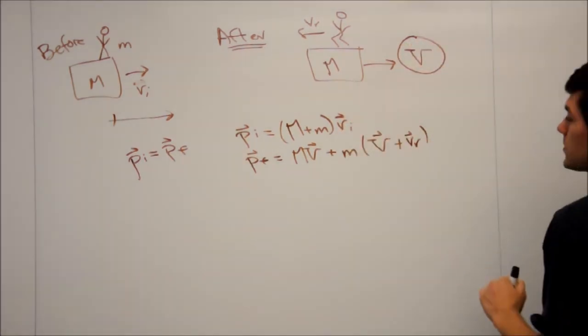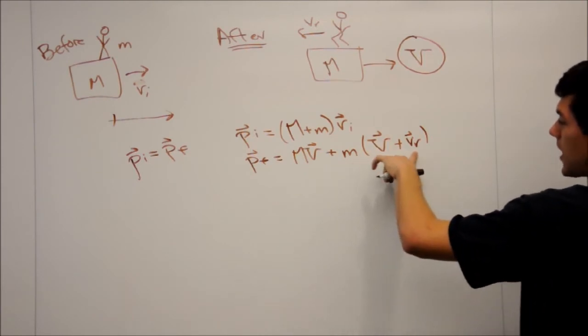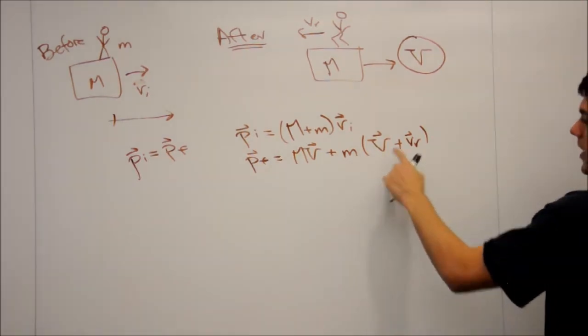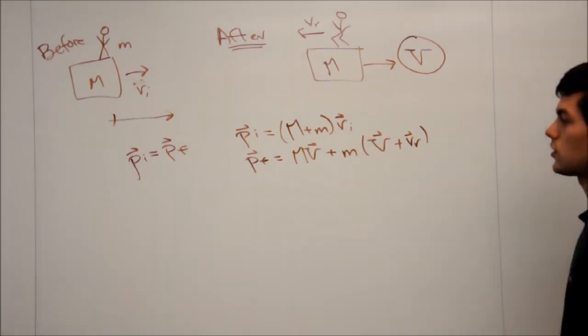Now we can set the two of these equal to each other, and we can pull out this little m times VR term, so that we can isolate the big V and solve for that later.